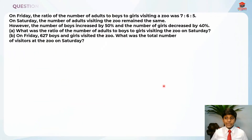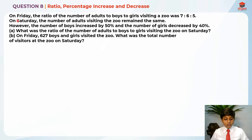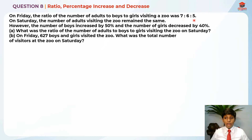This is question 8 and this question is testing us on ratio, percentage increase and decrease. Let's read the question for part A first. On Friday, the ratio of the number of adults to boys to girls visiting a zoo was 7 is to 6 is to 5.